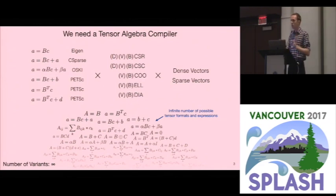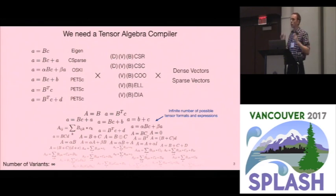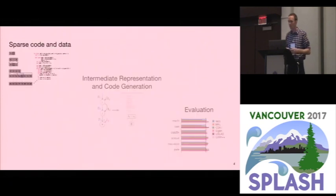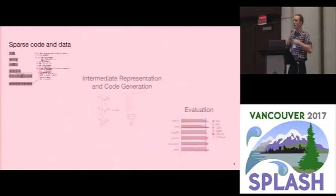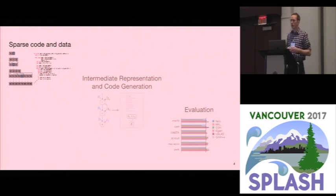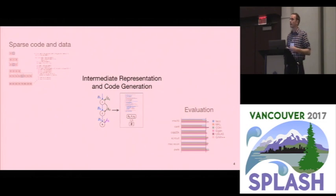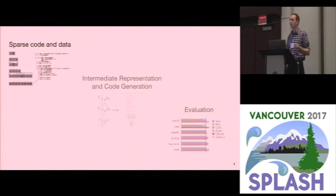If you don't implement a lot of these kernels as whole compound kernels, you lose a lot of performance. In the rest of this talk, I'm first going to describe how sparse code and data works. Then I'll describe how our compiler automates the process of generating these kernels. And then I'll evaluate our technique. But first, let's get a feel for sparse code and sparse data.